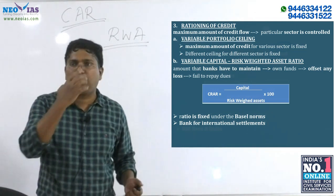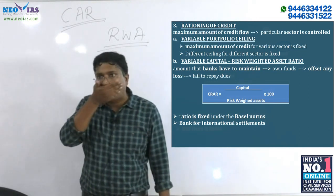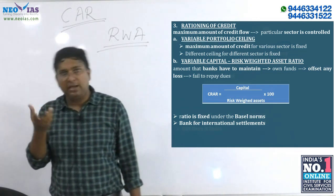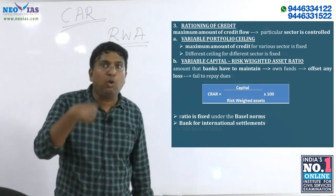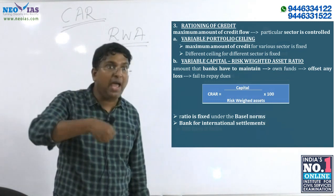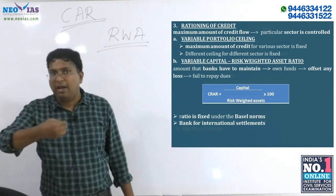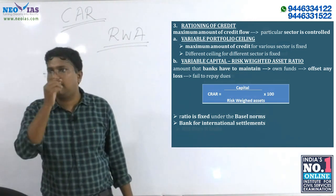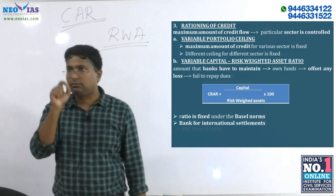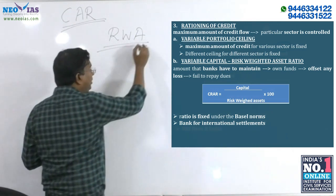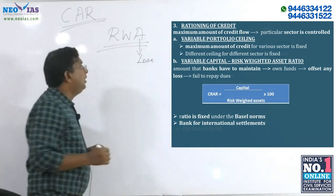What are assets for a bank? We know what are liabilities for a bank — deposits. What are the assets for a bank? Bank's loans are assets. Assets give income to the bank, so the asset is the loan.